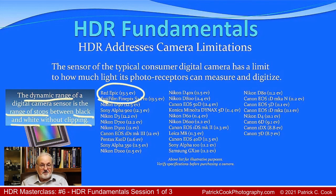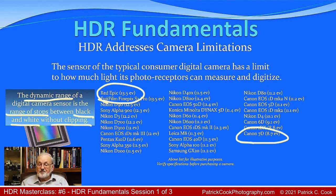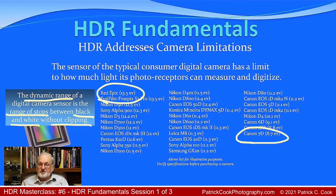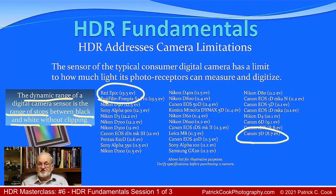The Red Epic has a dynamic range of 13.5 EVs. Compare that with the Canon 7D, which has 8.7 EVs — or 8.7 stops — of dynamic range. When you point your camera at a particular scene, the more dynamic range it has, the better it's able to digitize the light levels within that scene. A camera with lower dynamic range is going to have more of a tendency to clip because it's unable to fully digitize the amount of light coming into the photoreceptors of the camera's sensor.